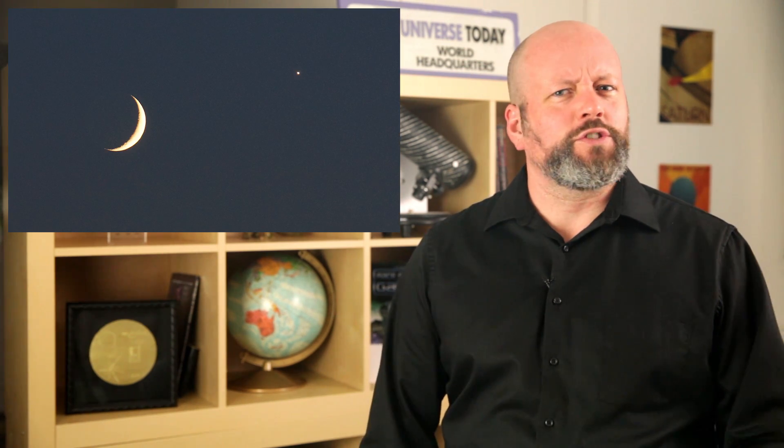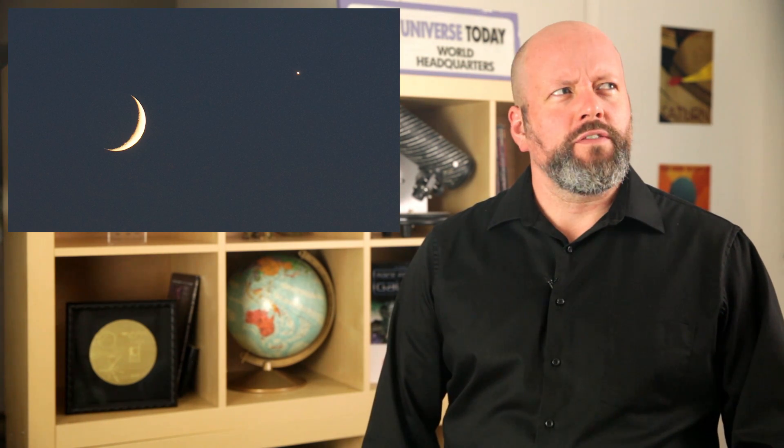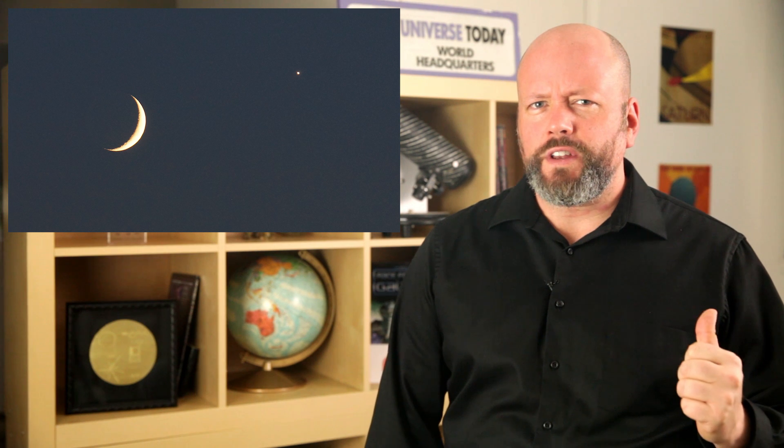In dark skies, Venus gets so bright you can even read a book to it. Inexperienced stargazers, however, suddenly notice a super bright star in the sky. How come they never noticed that before? Was it always right next to the moon like that?